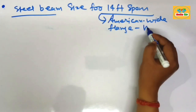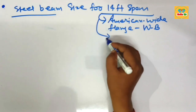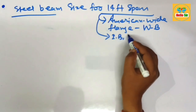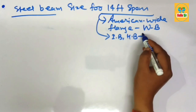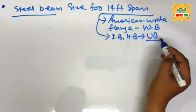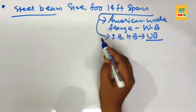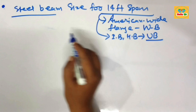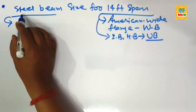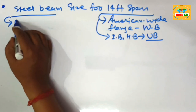It is generally denoted by W-beam, and its cross section looks like an I-beam or H-beam. It is also known as a Universal Beam, denoted by UB, and it is used in the steel industry for different civil construction work.